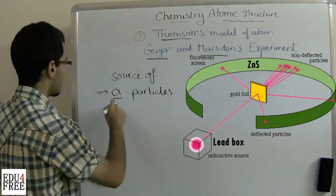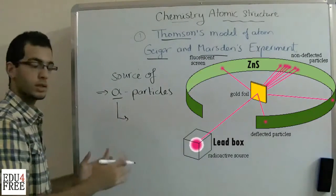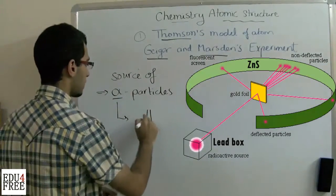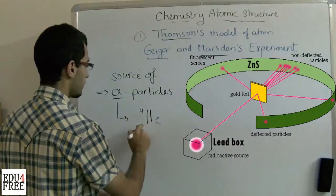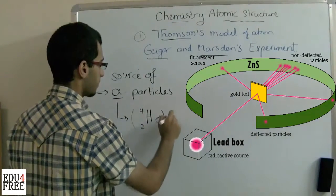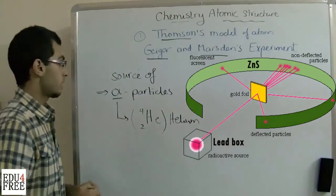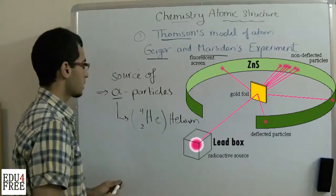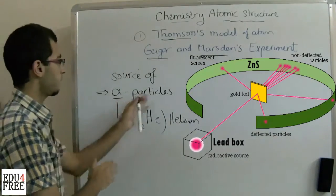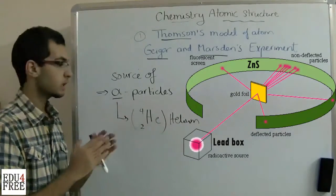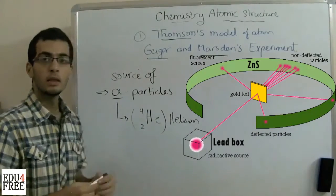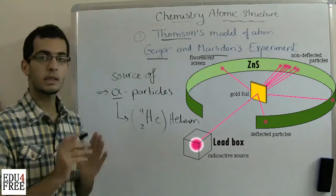So this source produced alpha particles. Alpha particles are very similar in their structure to the nuclei of helium. So this source was emanating alpha particles.